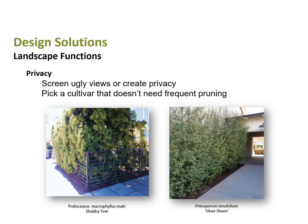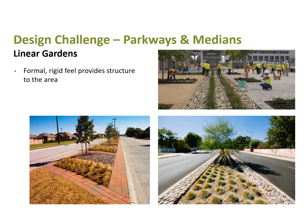For privacy, if neighbors keep their trash cans in a visible spot, a very basic row of hedges can screen the view and create a wall of shrubs. Parkways and medians are super challenging — if you think of them as linear gardens, that's sometimes helpful. They are formal and rigid and can provide some structure to the area. These examples show very linear designs within tight spaces.